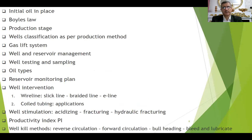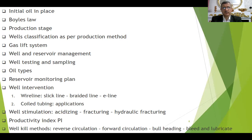Then if we want to calculate the reserves in the reservoir: initial oil in place, Boyle's law for gas, production stage, wellhead. We have five stages for the well life cycle. Then we have wells classification as per production method, gas lift system, well and reservoir management, well testing and sampling, oil types, reservoir monitoring plan, well intervention that mainly includes wireline and coil tubing. We will talk about them, well stimulation done by coil tubing, productivity index PI, well kill methods, and port methods in the well intervention.